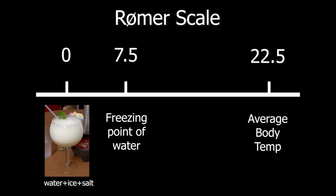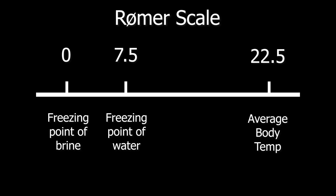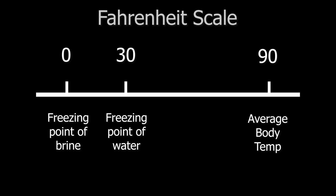But why did Fahrenheit pick such arbitrary numbers for the freezing point and body temperature? When Fahrenheit started, he took the Rømer scale and multiplied it by a factor of four to get rid of the fractions. Originally, this resulted in water's freezing point of 30 and the human body temperature of 90.